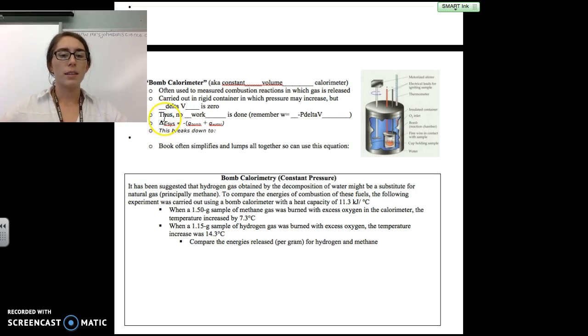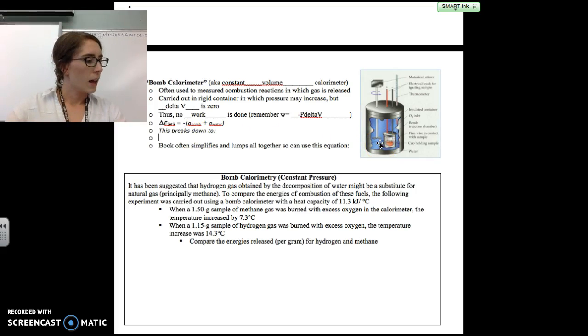When we're doing these equations, the energy of the system, or the energy of whatever is happening in this little bomb, is going to be the opposite of the heat that the bomb container and the water around it gain. So our equation is delta E equals negative (Q_bomb + Q_water). We've got to factor in the heat that the bomb itself is going to absorb or give off. We can break this down further: delta E equals negative, where Q_bomb would be m times C_bomb times delta T, adding parentheses to clarify.